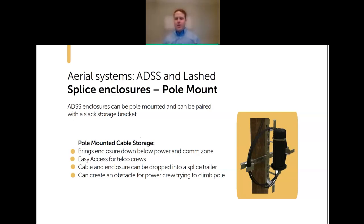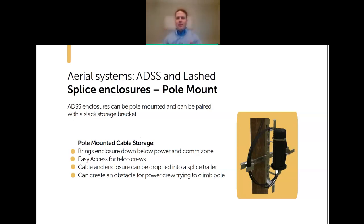The downside of the pole-mount bracket is that it's a wide bracket extending past the pole, creating an obstacle for any power crew that needs to climb that pole. So for certain poles that require regular climbing, you might mount the enclosure bracket on the next pole instead.